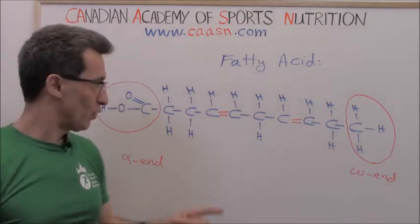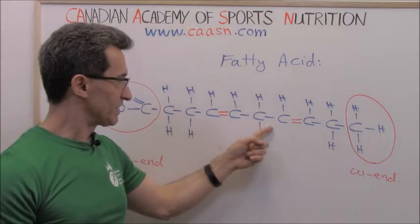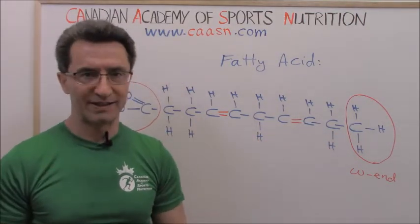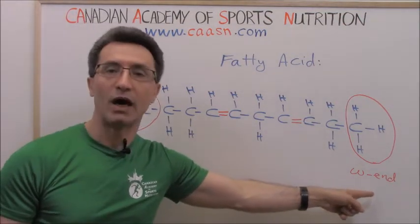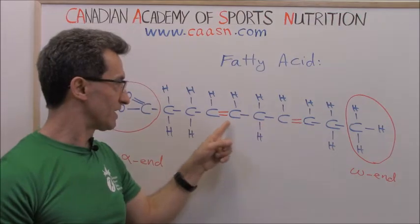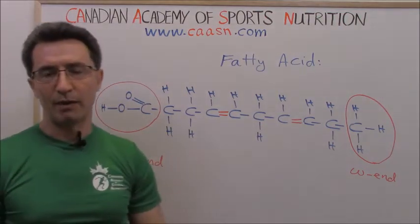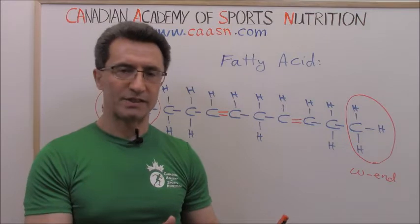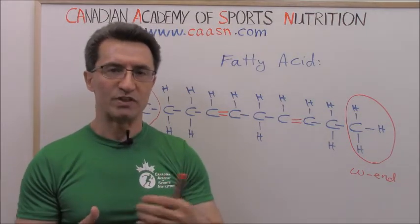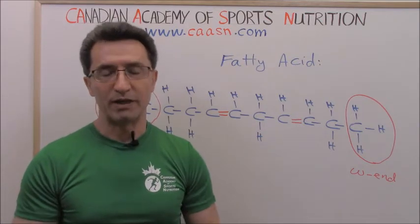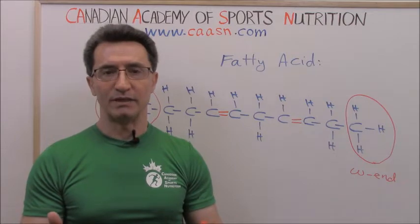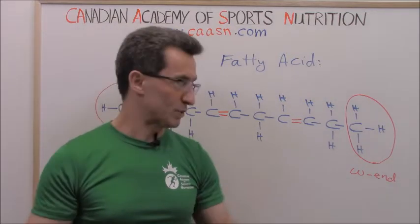Chemists, when counting the number of carbon atoms in a fatty acid, go from the alpha end — carbon one, two, three, four, five, six, seven, eight, nine, ten. But biologists count carbon atoms from the omega end — one, two, three, four, five, six, seven, eight, nine, ten. I'm not sure exactly why biologists and chemists couldn't come to a final agreement on which side to count from, but it seems biologists' suggestion has been approved more by the experts.